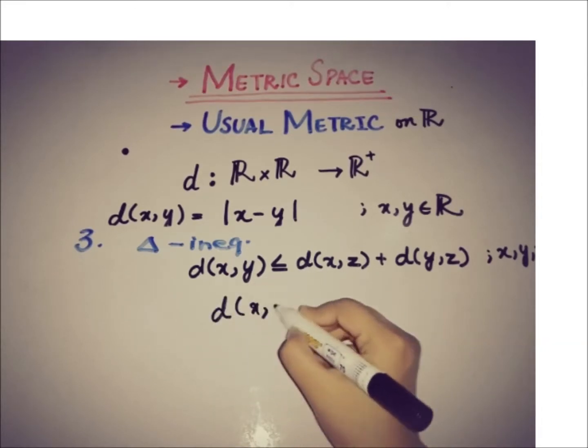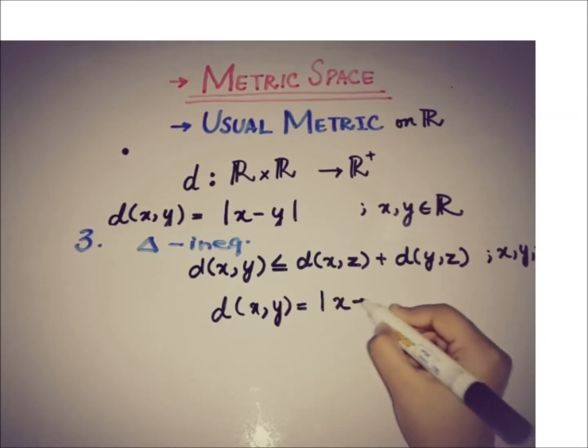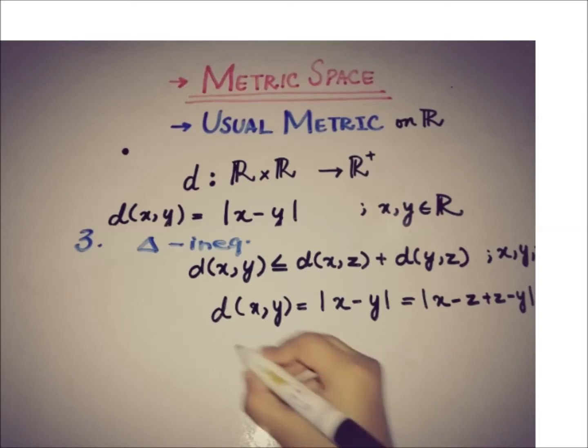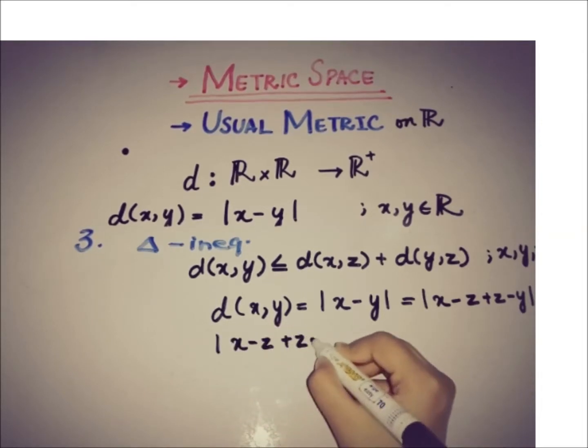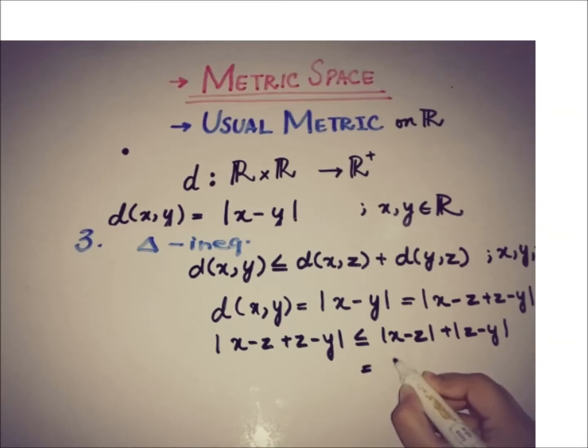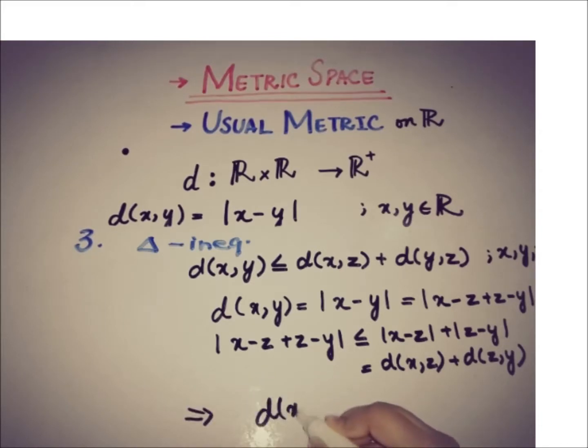So if we take d(x,y), by definition we know that it is equal to absolute value of x minus y and this is equal to x minus z plus z minus y, the absolute value. And by triangular inequality we know that this thing is less than or equal to absolute value of x minus z plus absolute value of z minus y, and this is equal to d(x,z) and this is equal to d(z,y). So in the end we can write it as d(x,y) is less than or equal to d(x,z) plus d(z,y).